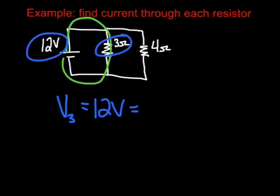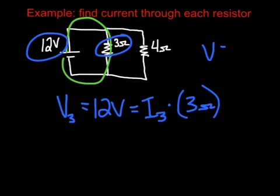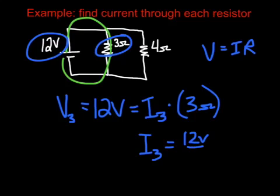And by Ohm's Law that has to be equal to its current, I'm going to use the subscript 3 again, times its resistance. What I'm using is the formula V equals I times R, that's Ohm's Law. And now I get I3 is equal to 12 volts divided by 3 ohms giving us 4 amperes.